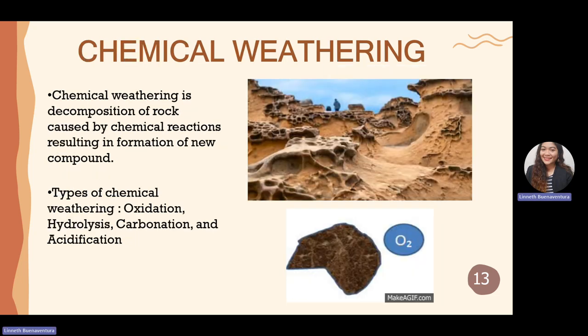Chemical weathering is the decomposition of rocks caused by chemical reactions. Most of the time it involves oxidation — the presence of oxygen — but chemical weathering can also happen through hydrolysis, carbonation, and acidification. In oxidation, geologic materials decompose due to the presence of oxygen. Hydrolysis is decomposition in the presence of water. Carbonation is the chemical reaction of carbon with rocks. Acidification — for example, acid rain — can also weather rocks and minerals.